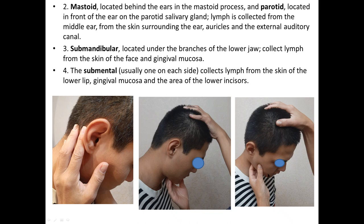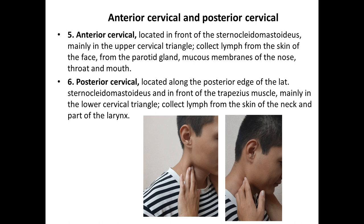Submandibular lymph nodes are located under the branches of the lower jaw and collect lymph from the skin of the face and gingival mucosa. The submental lymph nodes — usually one on each side — collect lymph from the skin of the lower lip, gingival mucosa, and area of the lower incisors. Normally, mastoid, occipital, and submental lymph nodes are not palpable; only submandibular lymph nodes may be palpable.